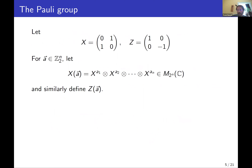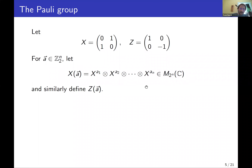We're going to work with stabilizer groups, which are subgroups of the Pauli group. The Pauli matrices are the two-by-two matrices X and Z. Given a bit string vector a of length N, I build the matrix X(a) as an N-fold tensor product, where X⁰ means the identity and X¹ means X. Similarly for Z(b). The N-qubit Pauli group Pₙ is the set of elements of the form X(a)Z(b) times a scalar, where the scalar is one of ±1 or ±i, and a and b are bit strings. This is a non-commutative group. X and Z anti-commute: XZ = −ZX. Multiplying X(a)X(c) gives X(a+c), and Z(b)Z(d) gives Z(b+d), but with a factor of (−1)^(b·c), making it non-commutative in general.